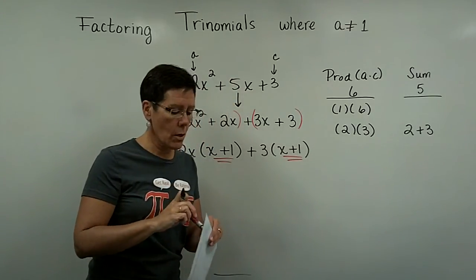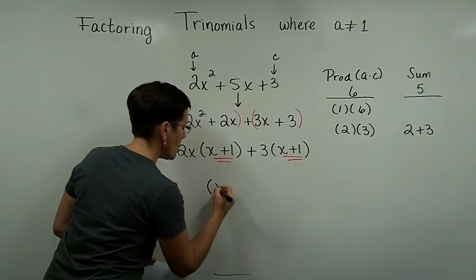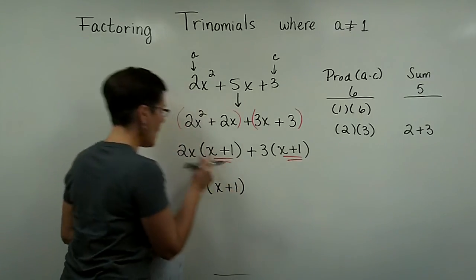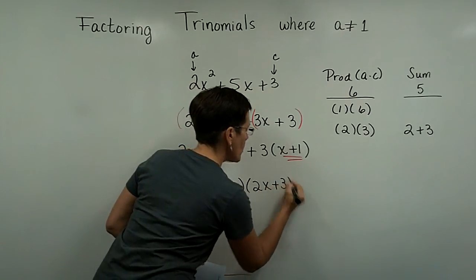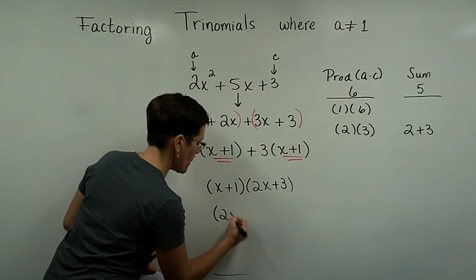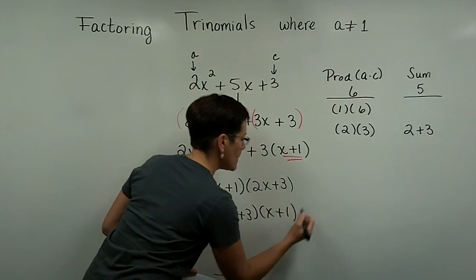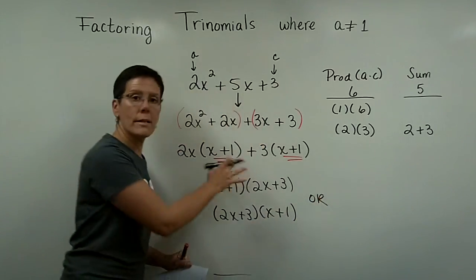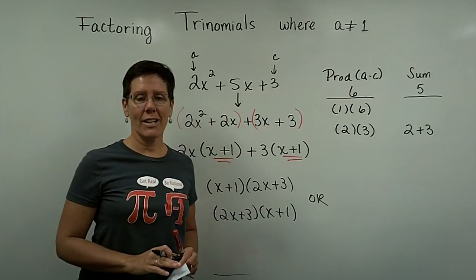And we said that if these matched, we know they are factorable because they do, that we'd write that binomial out once and then the 2x and the 3 would go in their own set of parentheses. Please remember I have previously written this in its factored form as 2x plus 3 times x plus 1. It doesn't matter which way you write this and we can go back and check this to see if we got it correct.